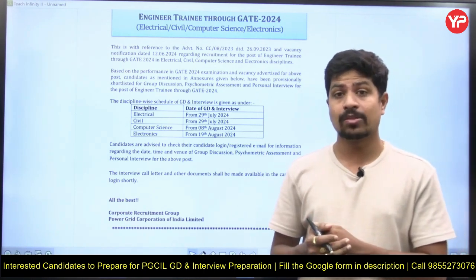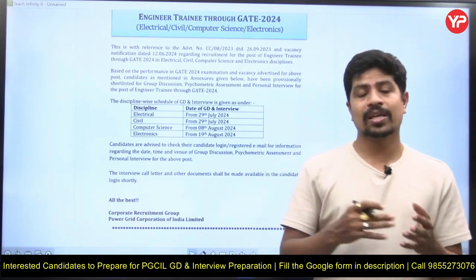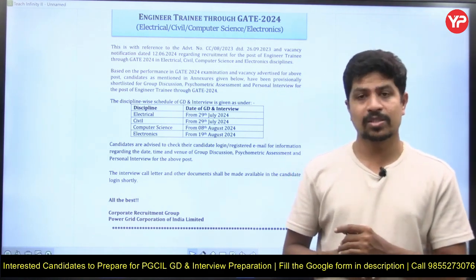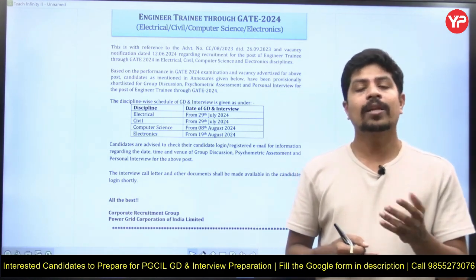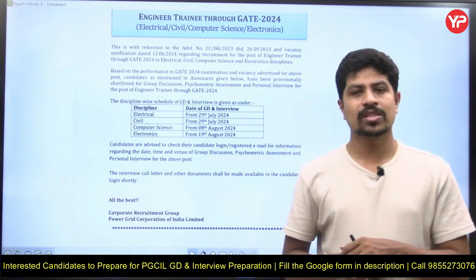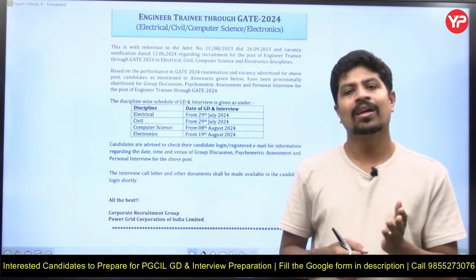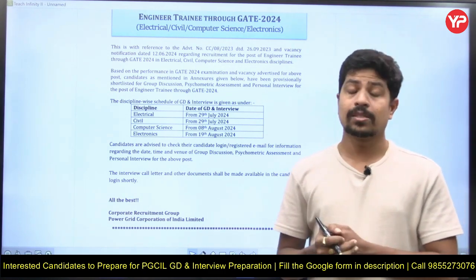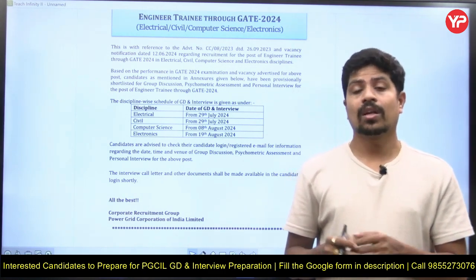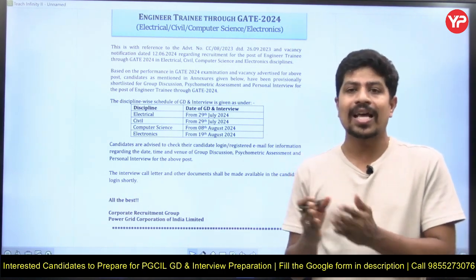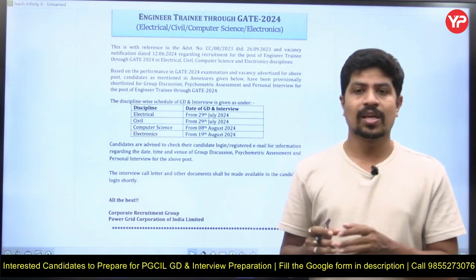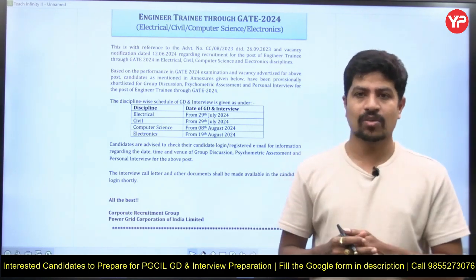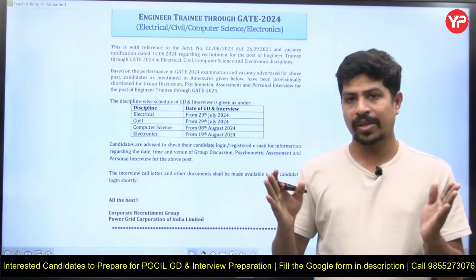The next very important subject after power system is electrical machines. Among electrical machines, the order of importance is: synchronous machine first, then transformer, then induction motor, and DC machines last. However, don't ignore DC entirely — having a basic idea of all topics is very important, as questions can come from any area.